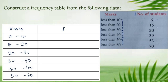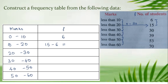The frequency 6 means there are 6 students who got less than 10 marks, so in the interval 0 to 10 there are 6 students. For less than 20 with 15 students, that means 15 students got less than 20 marks — from 0 to 20. But we need the number of students who got marks between 10 and 20. We subtract: 15 minus 6 equals 9.